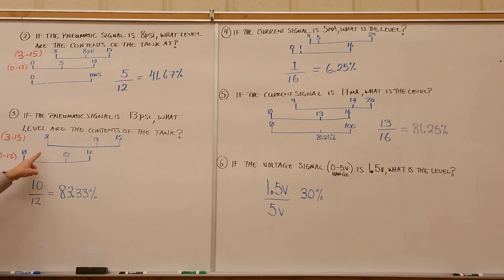15 goes down to 12, 3 goes down to 0. The 13 you were reading drops down to 10. Now take 10 divided by the high end of the range to give you 83.33%. So 13 psi is 83.33% on a 3 to 15 range.